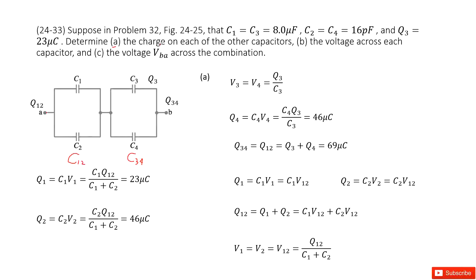First, we find the charge on each capacitor. The charge Q3 is given, and since C3 and C4 are in parallel, the potential difference is equal: V3 equals V4, which equals Q3 over C3. This gives us the potential difference for C4, and from that we get Q4 = C4 times V4. We input all quantities and get the answer.